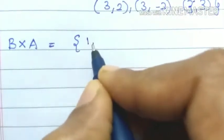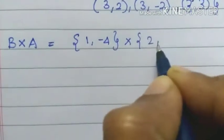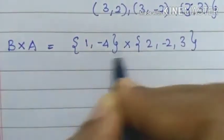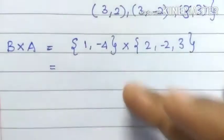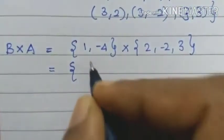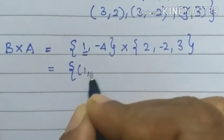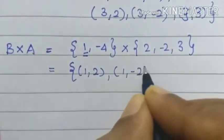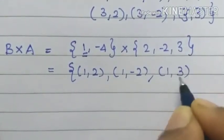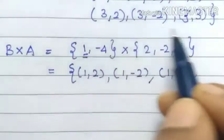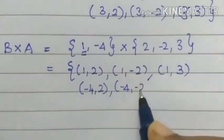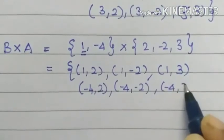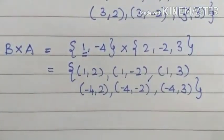Next, B cross A. B is 1, minus 4, cross A is 2, minus 2, 3. You have to make the first element — 2 elements and 3 elements gives 6 elements in result. The ordered pairs are: 1, 2; 1, minus 2; 1, 3; then minus 4, 2; minus 4, minus 2; minus 4, 3. That's all — 2 and 3 give us 6 elements in B cross A.